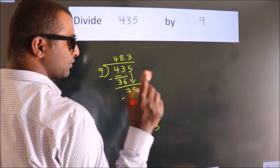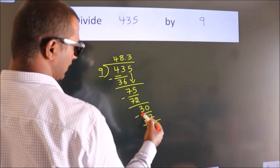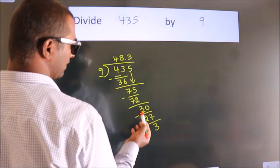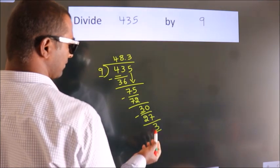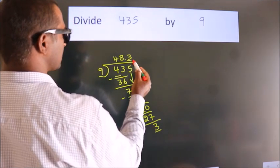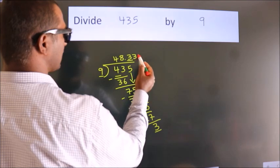Now you observe. Here we had 3, and we got 3 again. That means this number keeps on repeating.